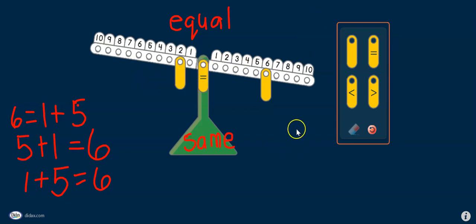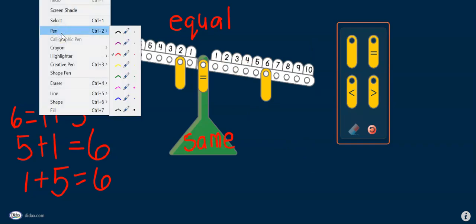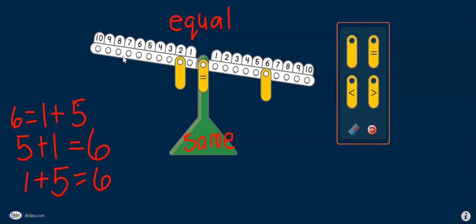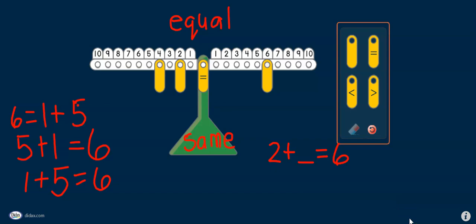What if I have 2? How many more will I need to make 6? That is correct. I need 4 more to make 6. So, 2 plus 4 equals 6.